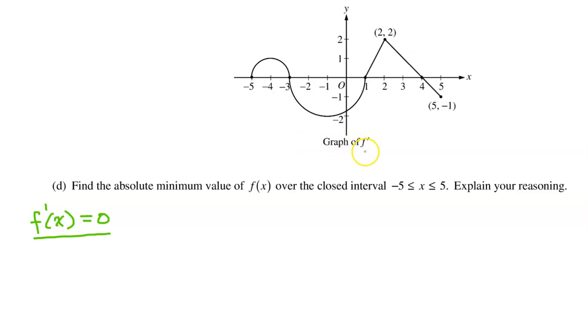Since they gave us the graph of f prime, it is easy to see where f prime is equal to 0. It's equal to 0 here, here, here, and here.